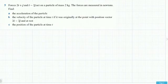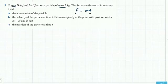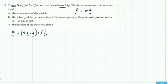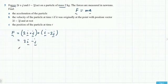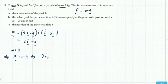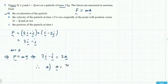Here we've got two forces acting on a particle and a mass — we'll use F equals MA. The forces in newtons are added together to give the overall force, which is 3i minus j. With mass equal to 2, F equals MA gives 3i minus j equals 2A. So for part A, acceleration equals 3 over 2 i minus a half j.